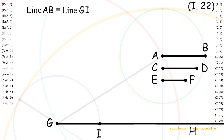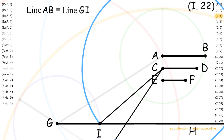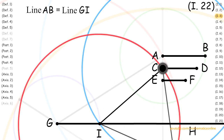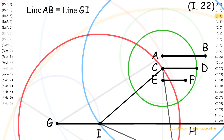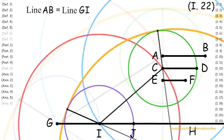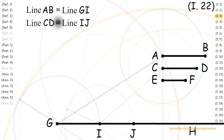Now, with line CD and line IH, we apply Proposition 3 again. And from this, we get line CD is congruent to line IJ.